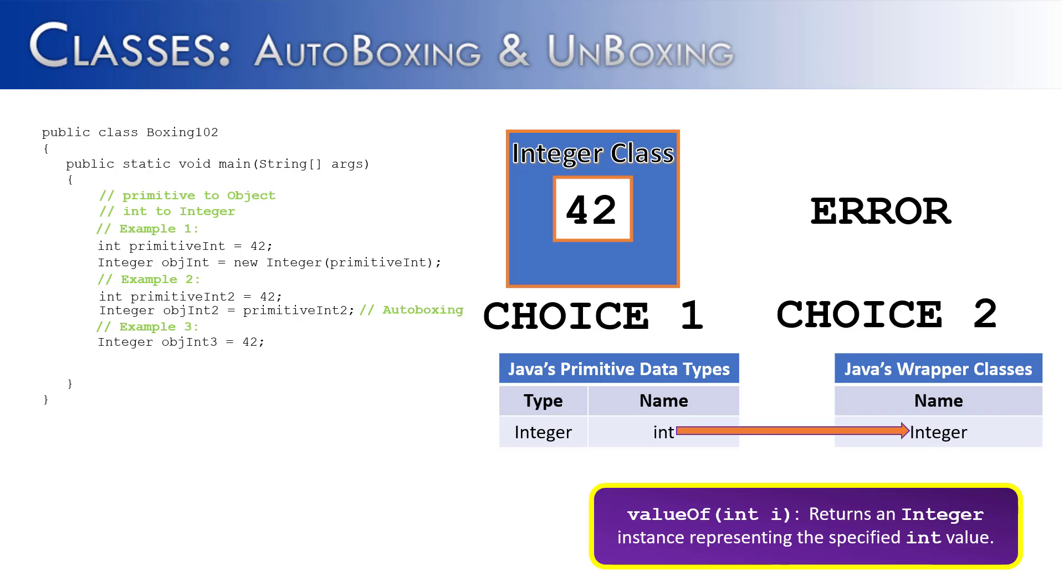It almost looks wrong in the way that we're doing it. We're saying integer object 3 is assigned to the primitive 42. Object on the left, primitive on the right. Is it going to work? We have the two choices, either it's going to be an error or it's going to wrap it.